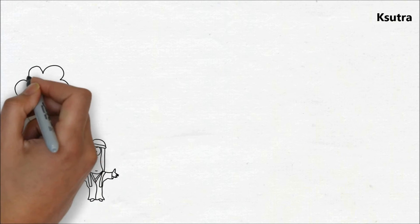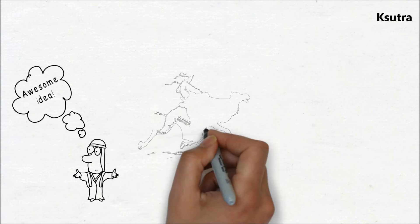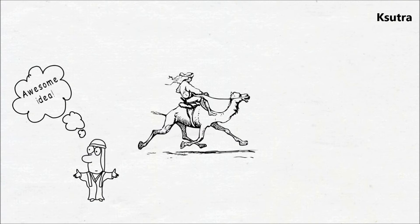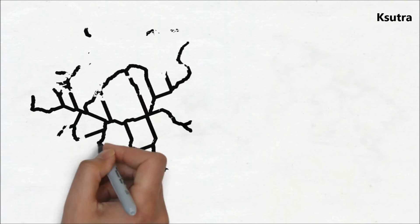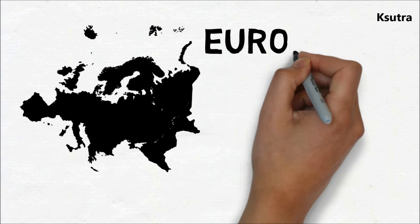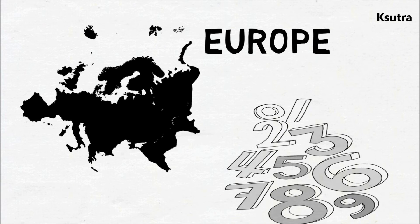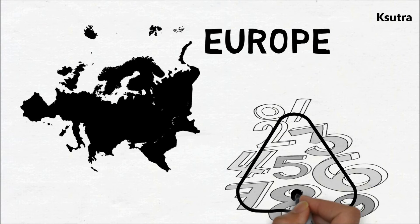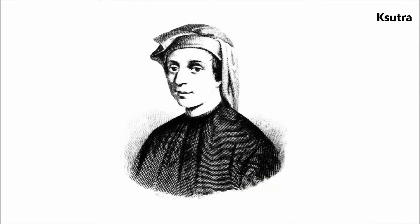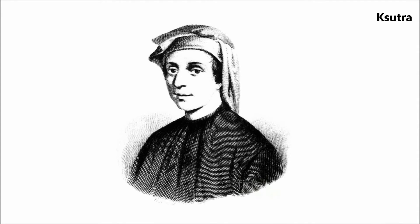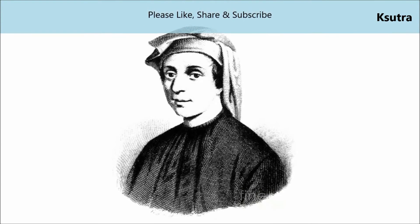Arabic people recognized the value of the Hindu system. They adapted the numerals and computation, then spread the ideas in their travels. Europeans resisted Hindu-Arabic numerals; the numerals, including zero, were not accepted until the Italian mathematician Leonardo of Pisa, also called Fibonacci, was instrumental in bringing the system into European mathematics in 1202.